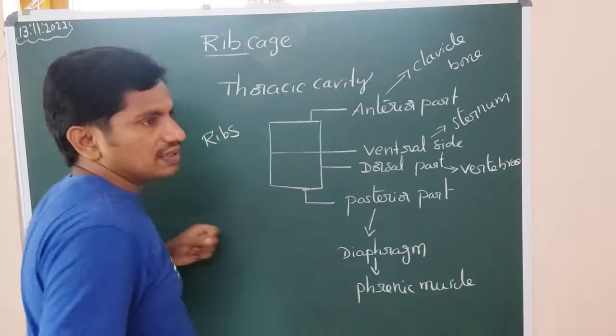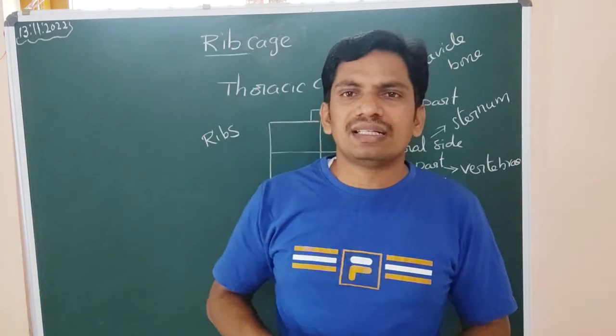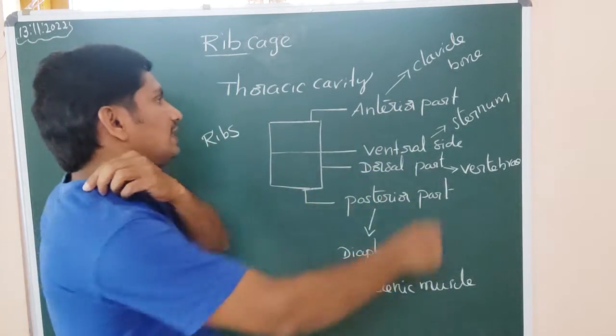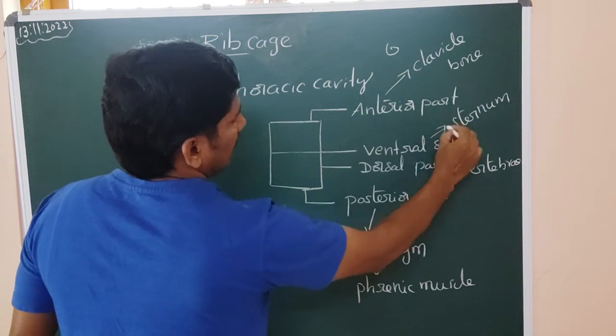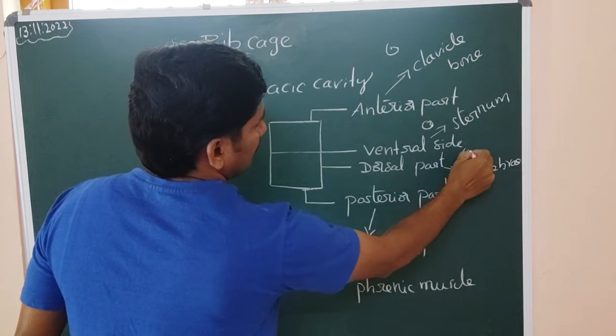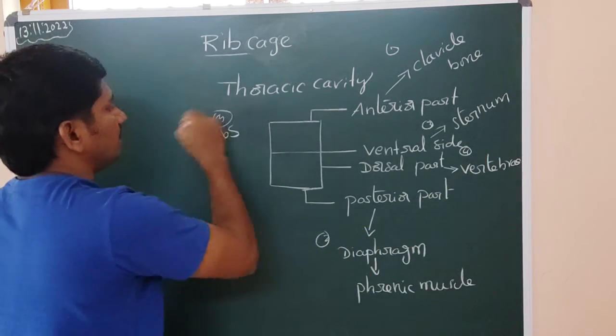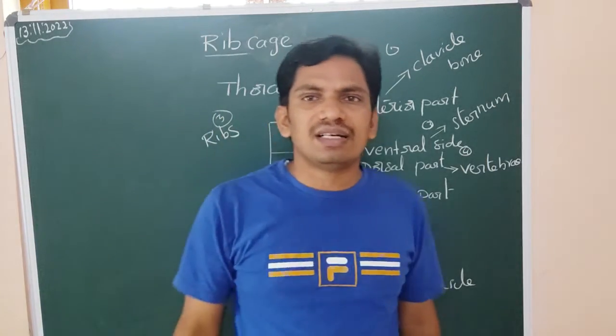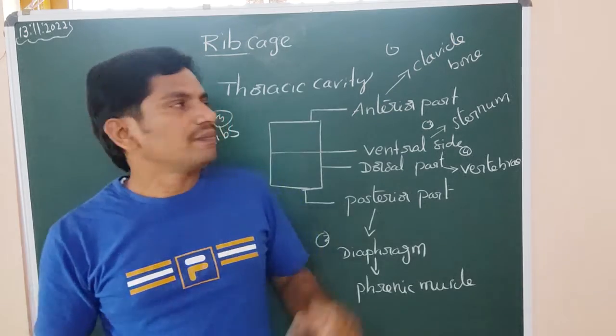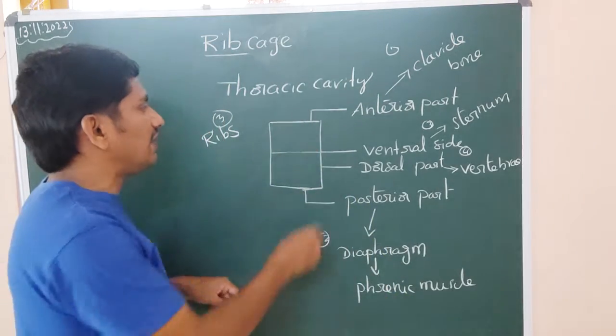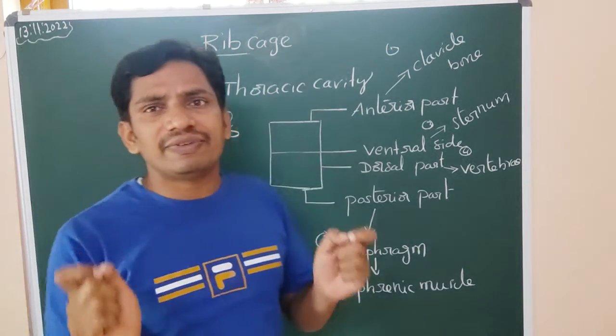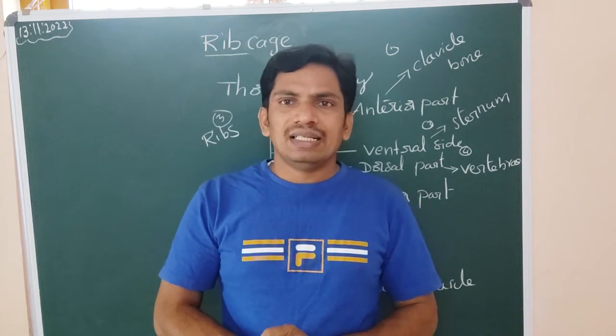12 pairs of ribs - it compresses the chest cavity. So these one, two, and three, four, five parts which makes the formation of the thoracic cavity or the rib cage.